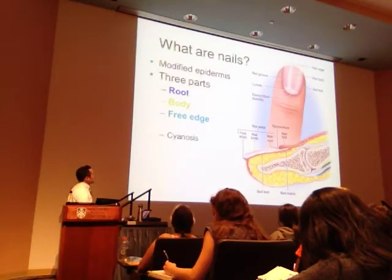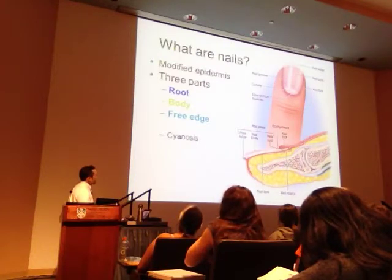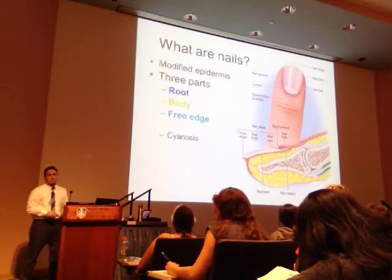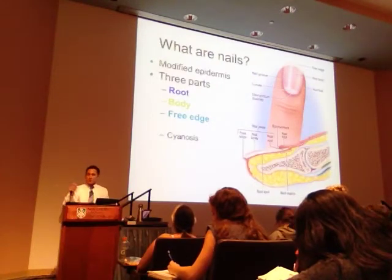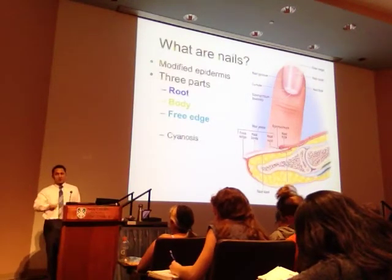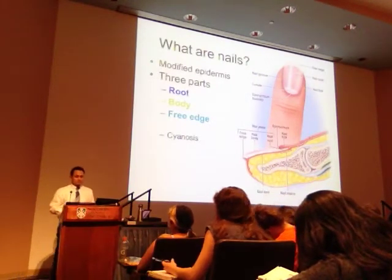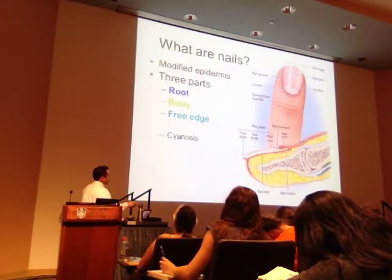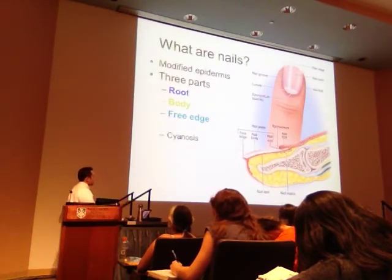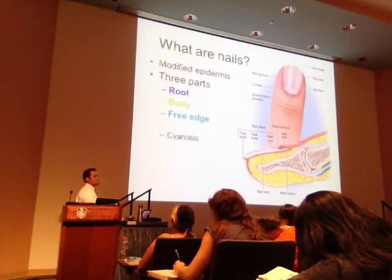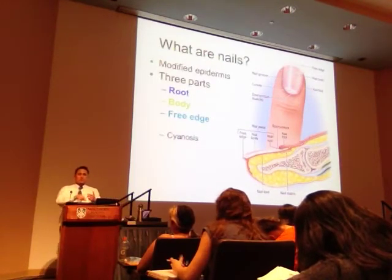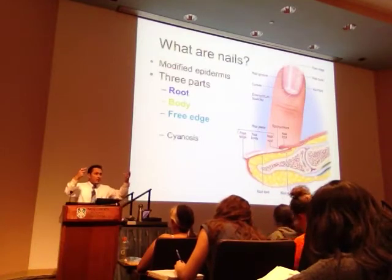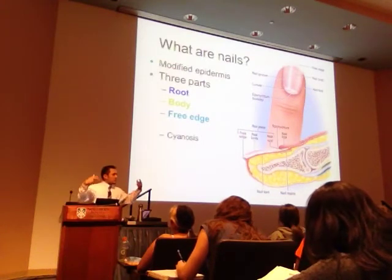The root, in cross-section, is the regenerative layer — synonymous with our stratum basale layer of the epidermis. That's going to give rise to the new nail. The body is the part that you paint or decal, and the free edge is the part that you trim.